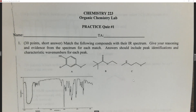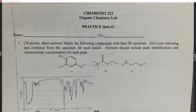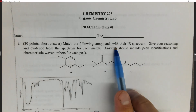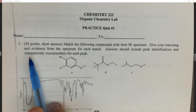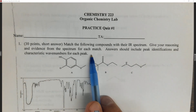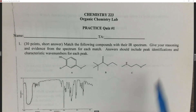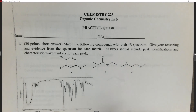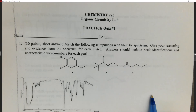Hi everyone. In this video I'm going to go over the practice quiz for the Organic Chemistry 2 lab. It should be timestamped so you can switch to whichever question you want. The first question says: match the following compounds with their IR spectrum, give the reasoning and evidence for the spectrum for each match, and answers should include peak identifications and characteristic wave numbers for each peak.